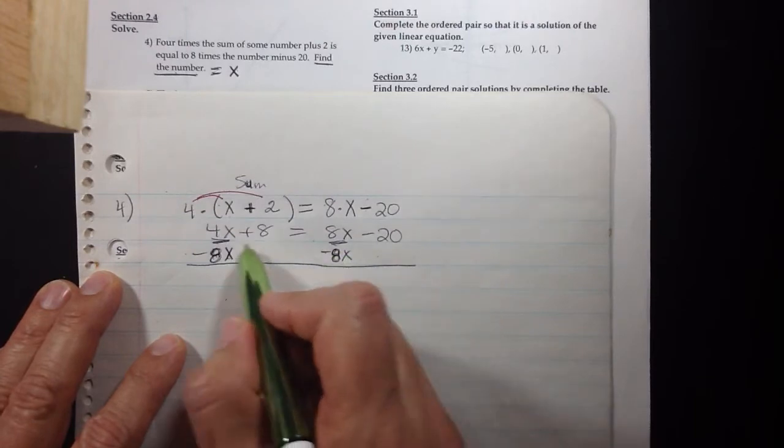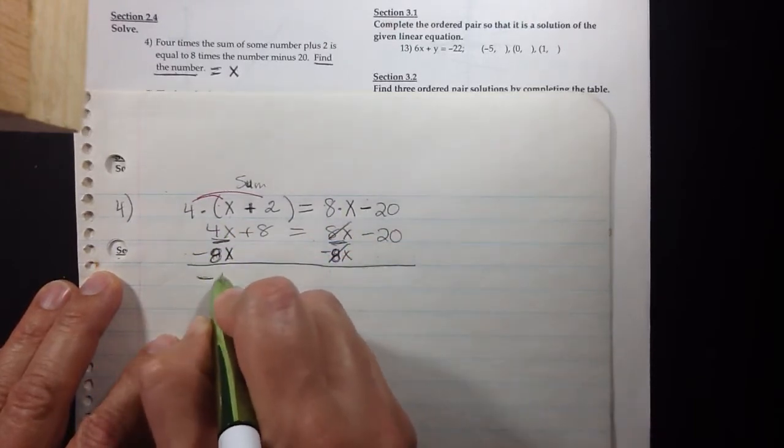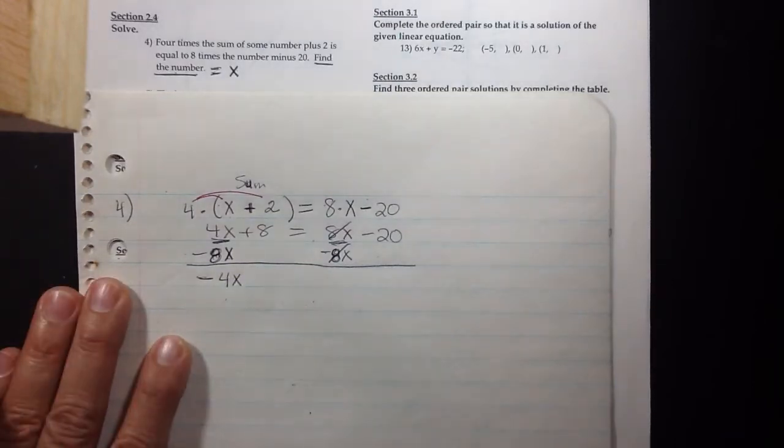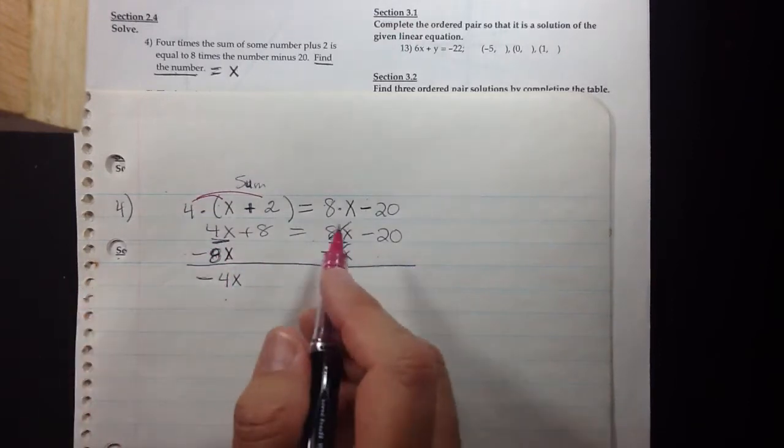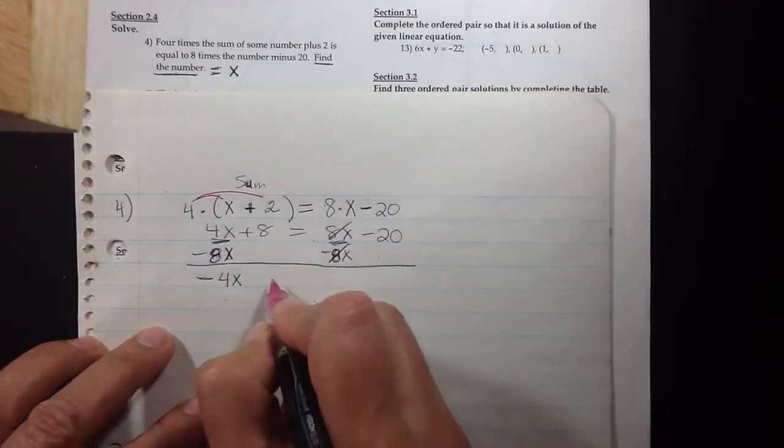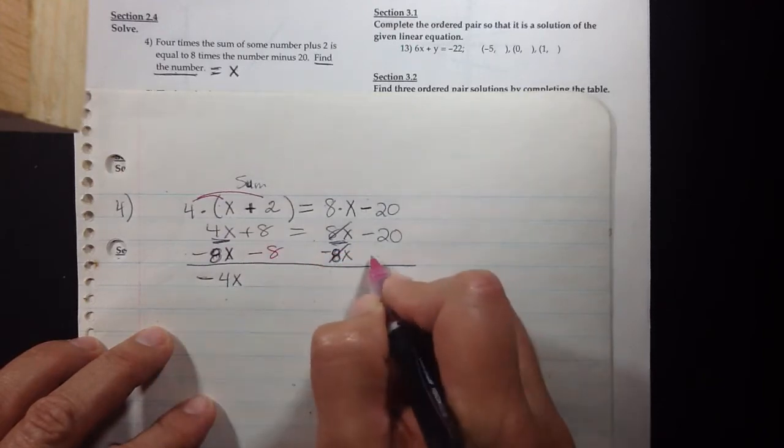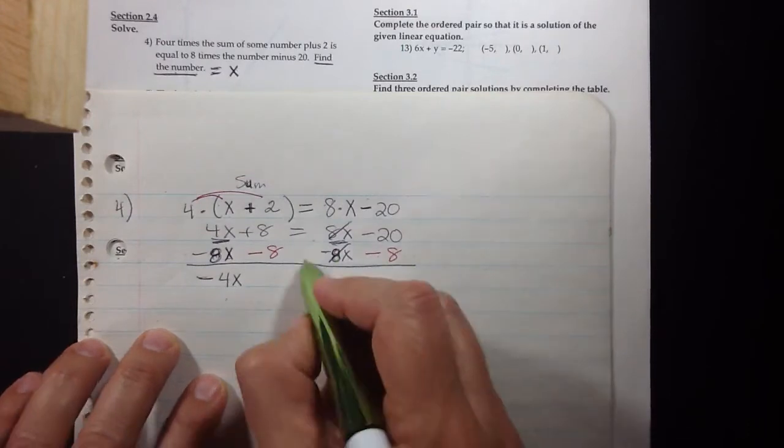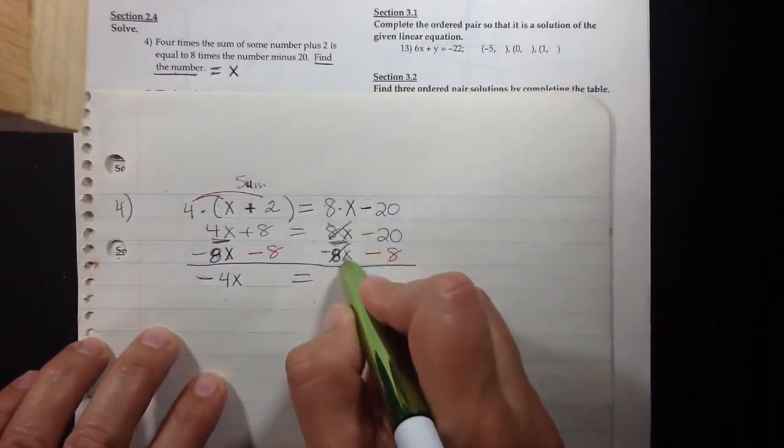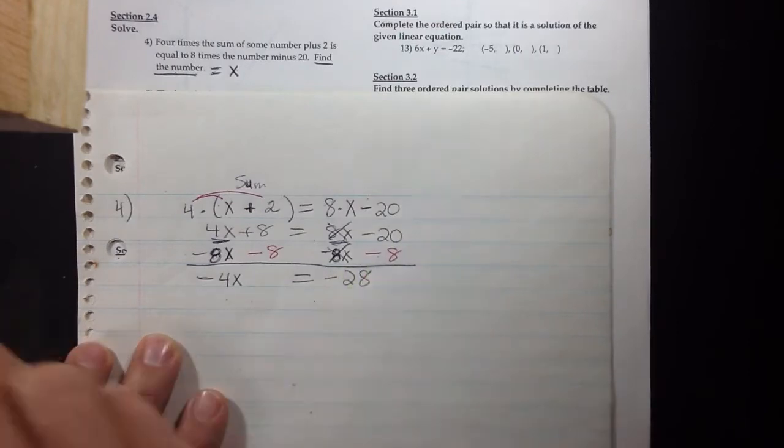If I subtract eight X from both sides to move the X to the left, I typically keep the X on the left. Some of you like to avoid the negative and if you subtracted four X that would work too. So we're going to have negative four X and then subtract eight to put the constants over here on the right. So this X term is gone, minus twenty minus eight is minus twenty eight.